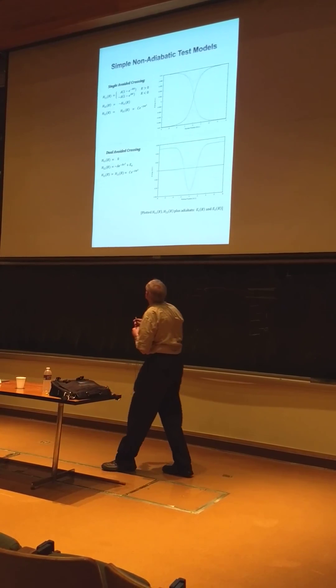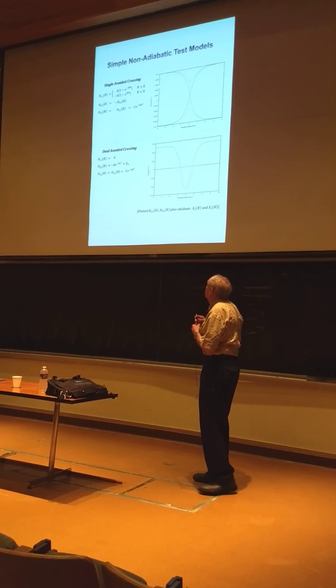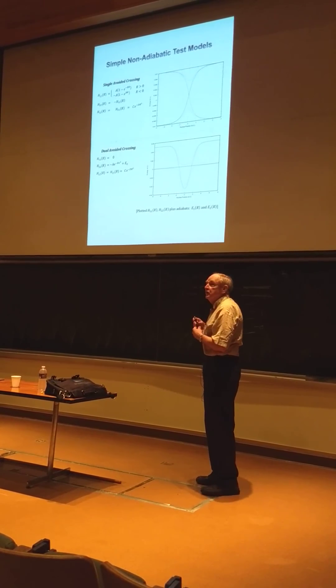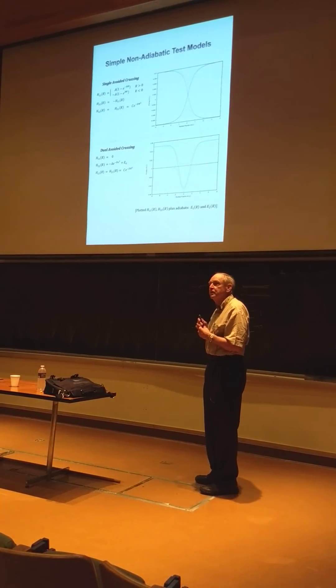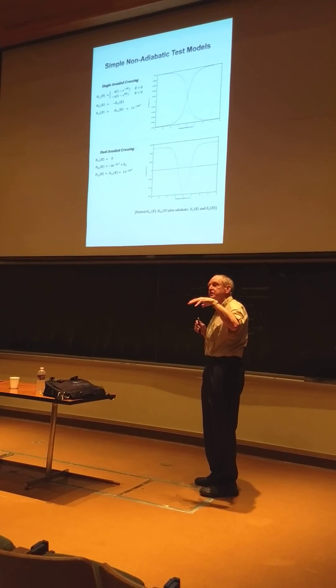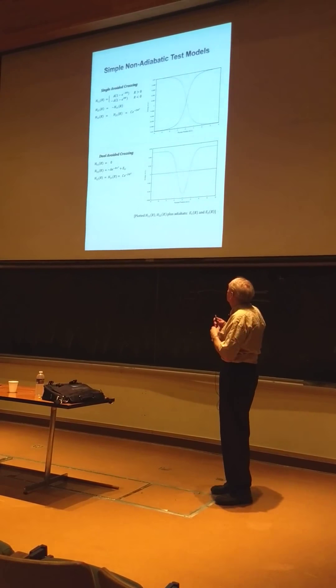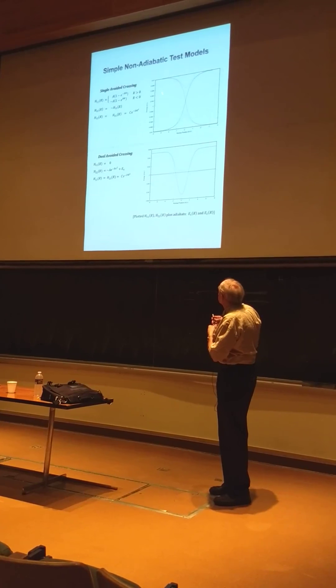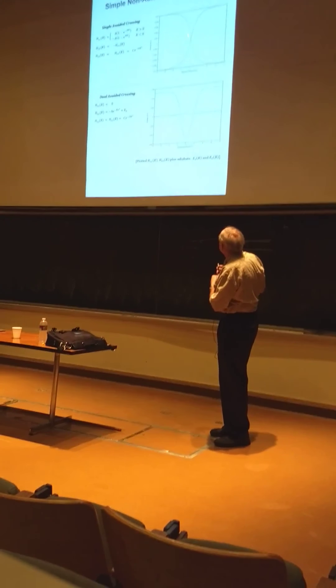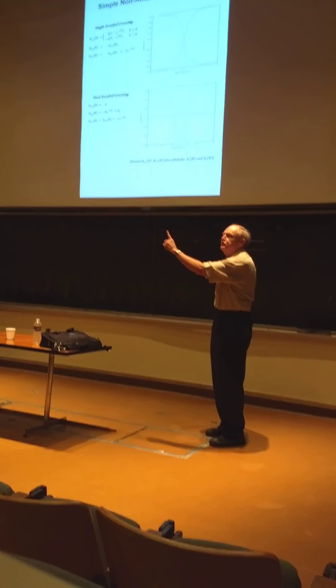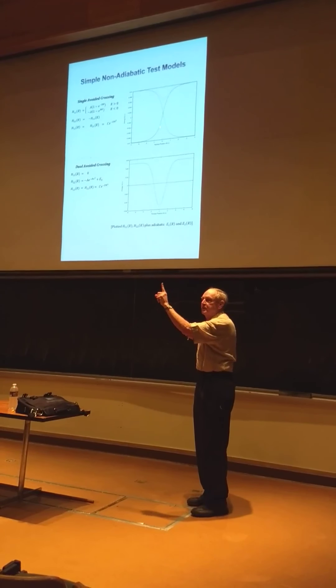Well, so we first did these little toy problems that John Tully had. A lot of people started out with these. And John was devising his, the latest version of his surface hopping model. There was a, these were the potential curves. There's a single, this is a one-dimensional, one-dimensional scattering problem.